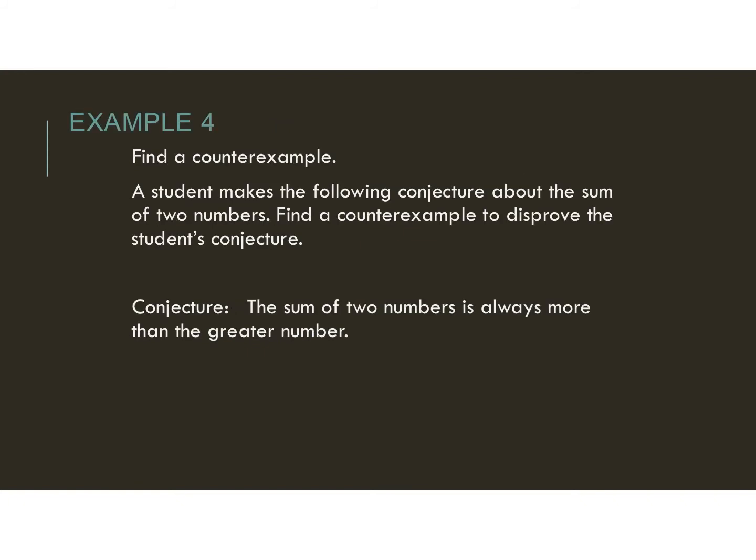Let's try another example for finding a counterexample. A student makes the following conjecture: the sum of two numbers is always more than the greater number. Find a counterexample to disprove it. I don't want you to prove it true — I want you to prove it false. Can somebody come up with two numbers that when added are not bigger than the greater number? Making the numbers the same won't work; two plus two still gives a sum greater than the bigger number.